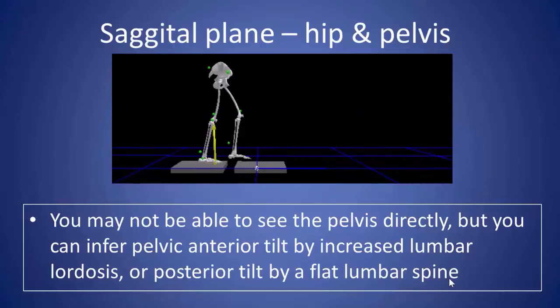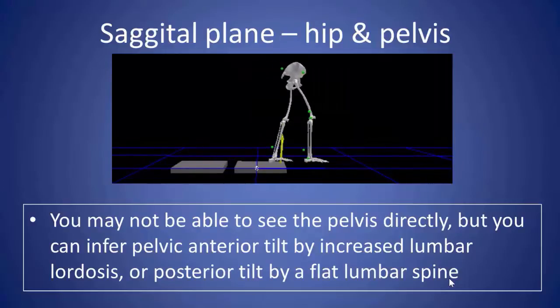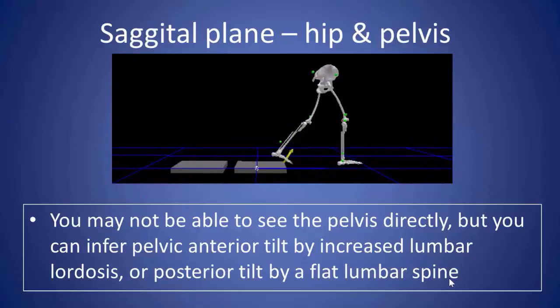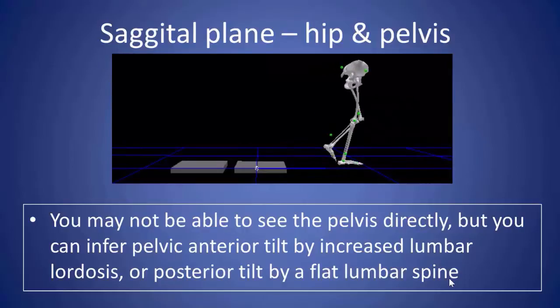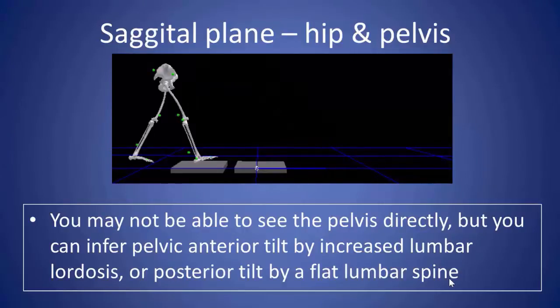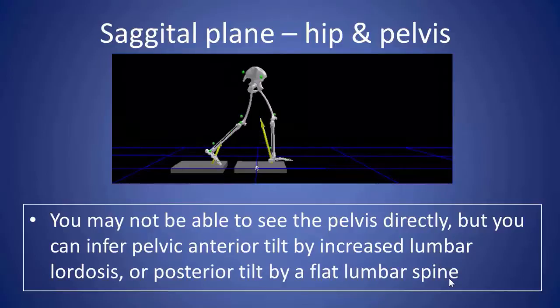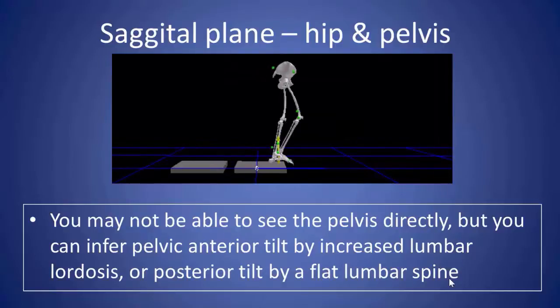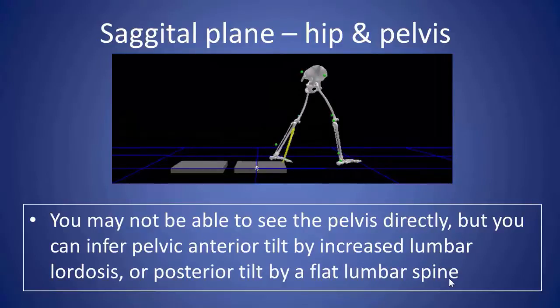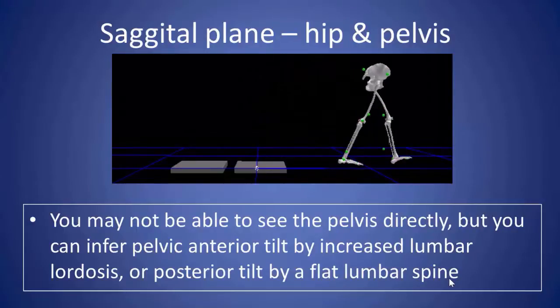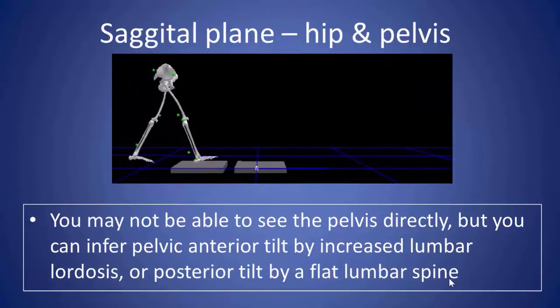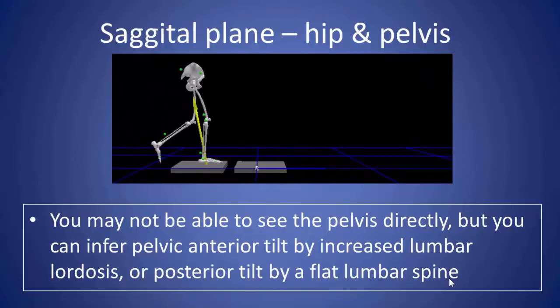Now, the pelvis is actually difficult to see in terms of its movement, and there isn't much movement, but you can gain some insights into pelvic position by looking at the posture, particularly the lumbar spine, because if you see the lumbar spine in lordosis, this probably means the pelvis is in an anterior tilted position, whereas if the lumbar spine is flattened, this coincides with posterior tilt.